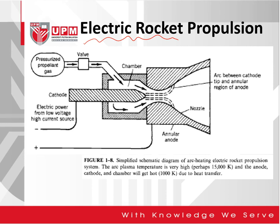Next, electric rocket propulsion. This is a schematic diagram of a heating electric rocket propulsion system using the arc plasma temperature, normally around 15,000 degrees Kelvin. The anode, cathode, and chamber will get hot around 1,900 degrees Kelvin due to heat transfer.